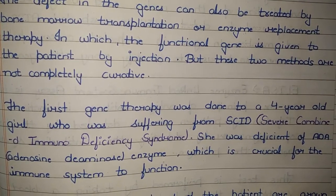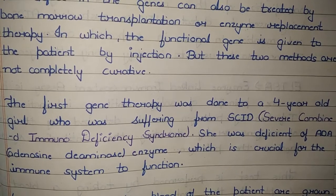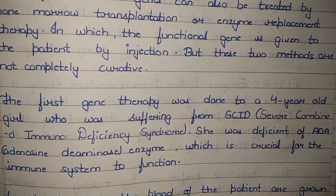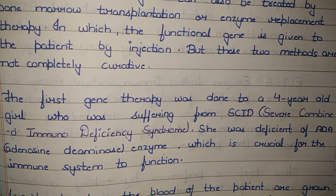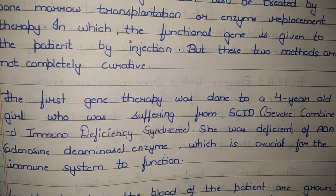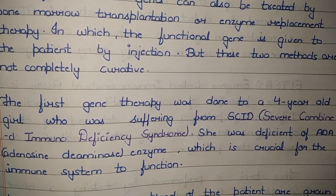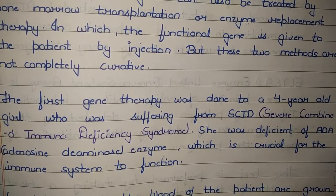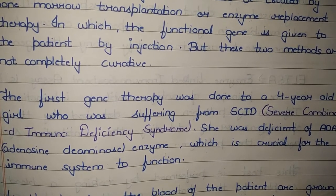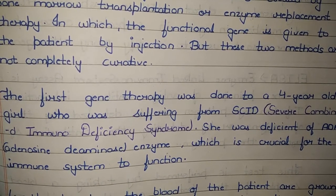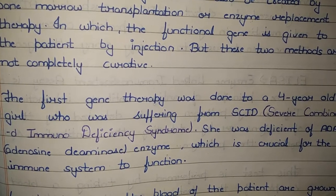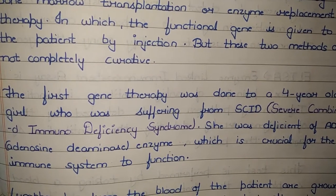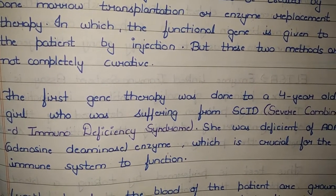The first gene therapy was performed on a 4-year-old girl suffering from severe combined immunodeficiency (SCID) syndrome. She was deficient in the ADA (adenosine deaminase) enzyme, which is crucial for the immune system to function. Without this enzyme, the immune system becomes weak and even minor infections can be fatal.